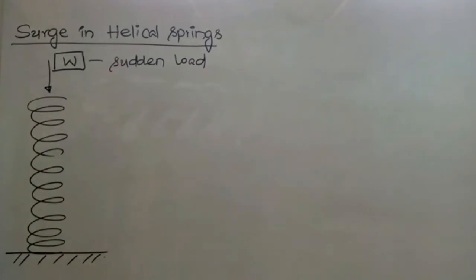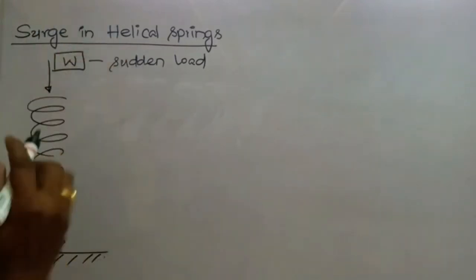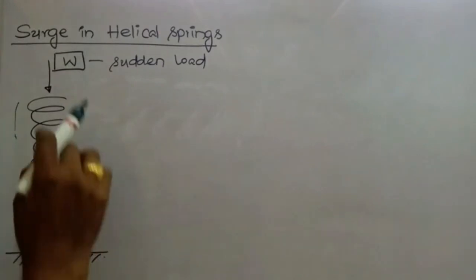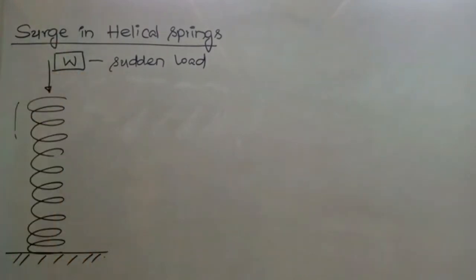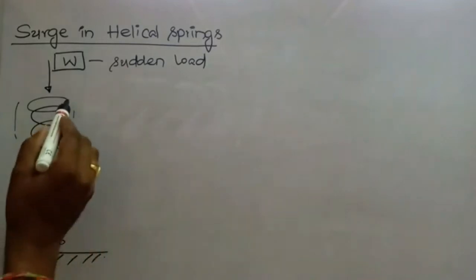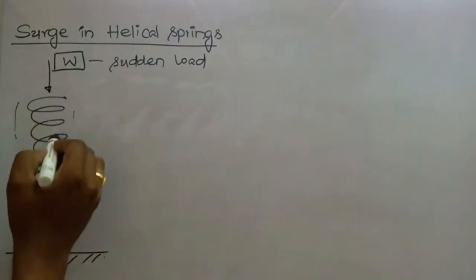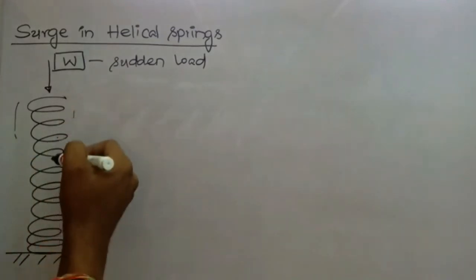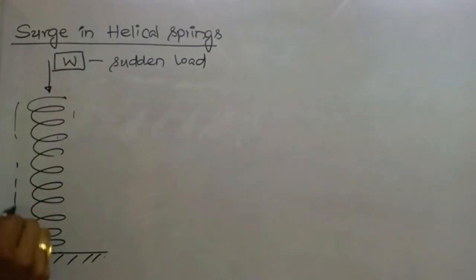The load is of variable type, so you have different types: impact loads, alternating loads, and fluctuating loads. When you apply this type of variable load on a helical spring — one end fixed, other end loaded — the entire deflection is produced in the coils in contact with the load. This deflection is not uniform at all points; it slowly propagates to adjacent coils, reaching the bottom-most supported point.